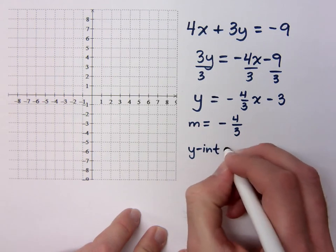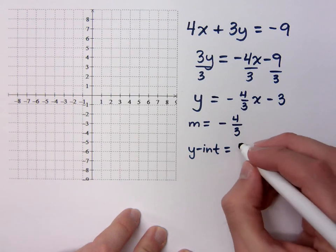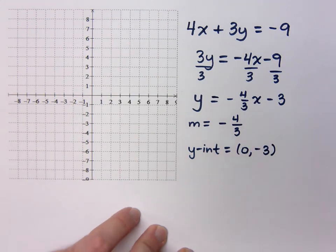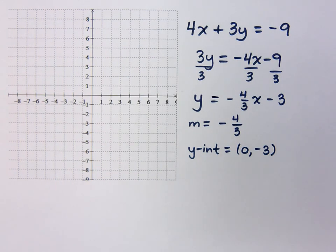What's your y-intercept? Seriously? Zero negative 3. The y-intercept is an ordered pair. The slope is just a number.